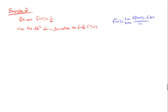Example 2 in 2.7 is this right here. Given the function f of x equals 1 over x, use the definition of a derivative to find f prime of x.